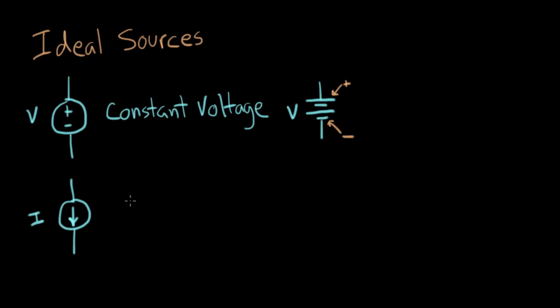The current symbol is I. It can look like that, or the arrow can point the other way, depending on the application. That's an ideal current source, and those are the two symbols for constant current.